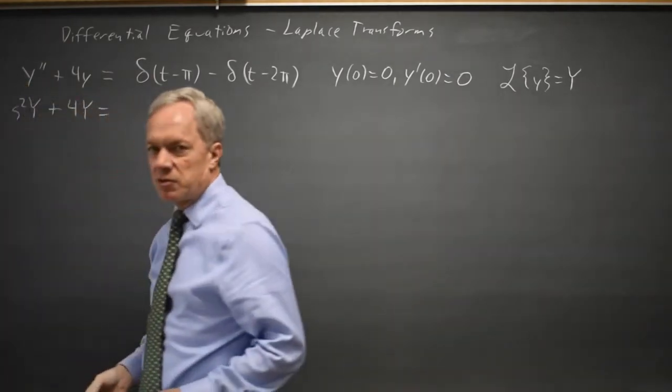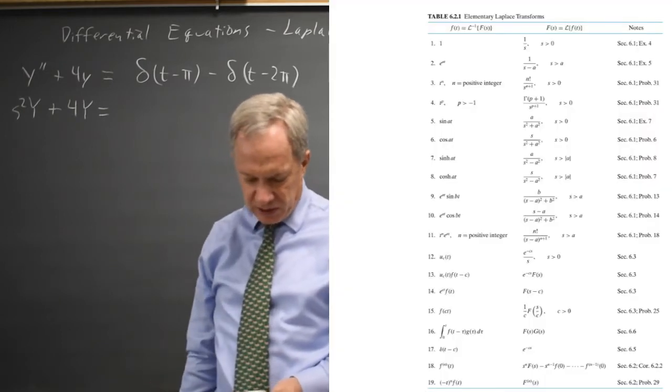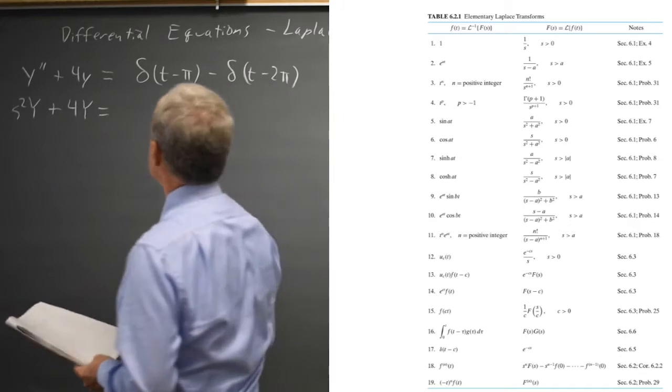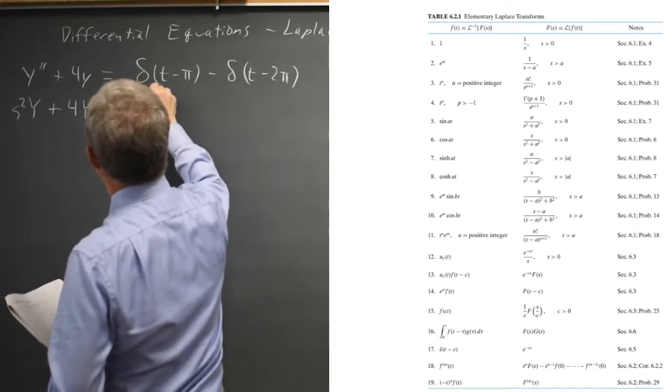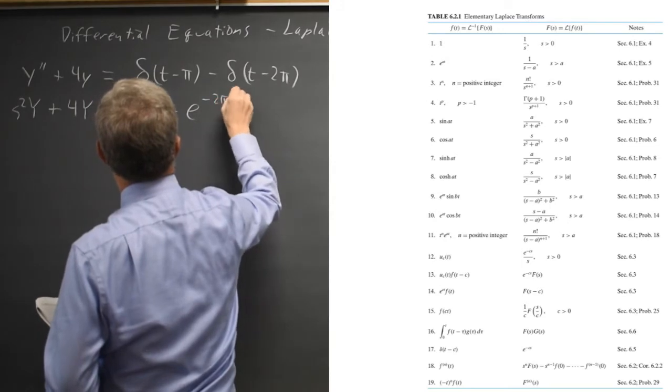The transform of the delta function at t minus c, according to my table line 17, is e to the negative cs, so this is e to the negative pi s minus e to the negative 2 pi s.